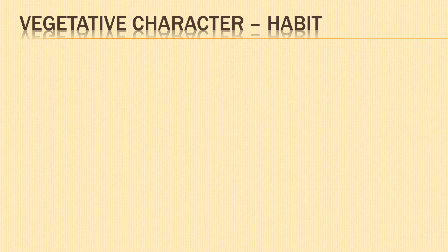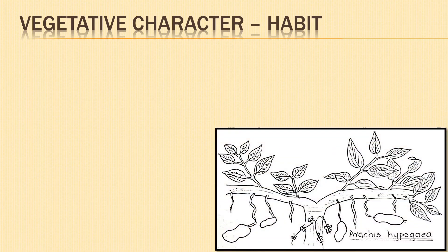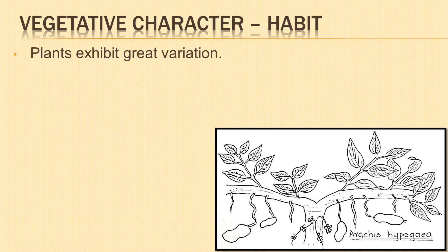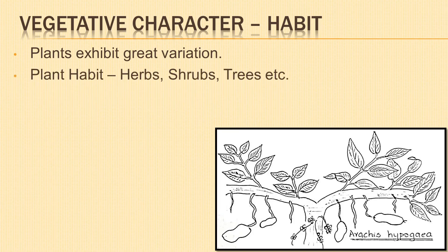Plants belonging to family Fabaceae exhibit great variation in habit. They may be herbs, undershrubs, shrubs, trees, or climbers. Climbers twine round the support with the help of slender, wiry, closely coiled structures called tendrils.